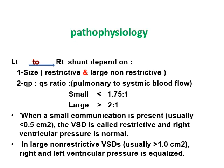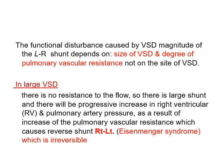When VSD is small, the Qp:Qs ratio is less than 1.75:1. When it is large, the ratio exceeds 2:1. A small communication — usually less than 0.5 cm² — is called restrictive VSD, and right ventricular pressure is usually normal. In large non-restrictive VSD — usually more than 1 cm² — right and left ventricular pressures equalize. The functional disturbance depends on the size of VSD and the degree of pulmonary vascular resistance, not the site of VSD.